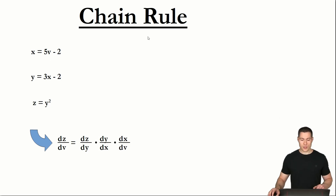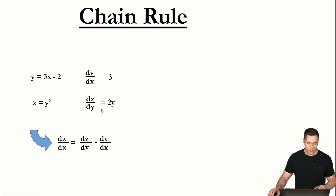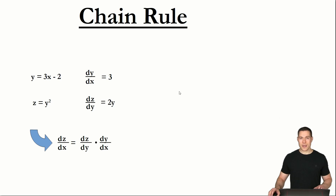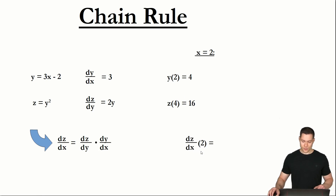Now let's look at a concrete example using two functions. Since we're going to need them for the derivatives, let's write them out. Now let's say x is equal to 2. In that case y would be 3 times x minus 2, so 3 times 2 minus 2 which is 4. And z is y squared, so 4 squared which is 16. These steps resemble the feed forward. Now if we want to determine the derivative of z with respect to x when x equals 2, we have to move backwards.